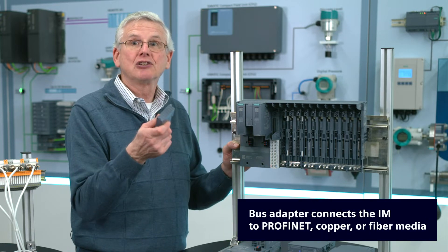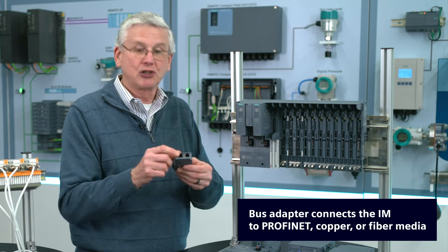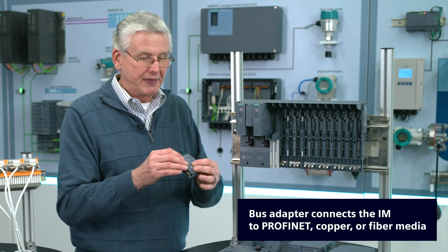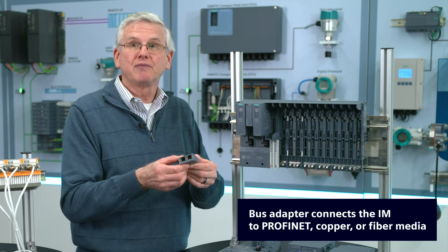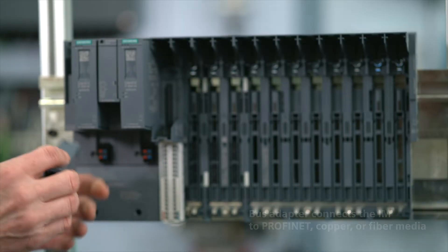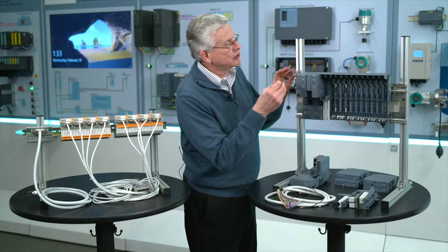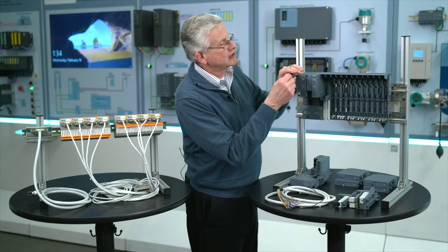Now I need a physical connection to PROFINET, and so we call that a bus adapter. So it's nothing more than a two-port switch. This particular one is RJ45. We also have ones that are fiber, and actually one that's fiber and copper. So literally what we need to do is plug that in. And this one actually has a little screw to make sure it stays in place.